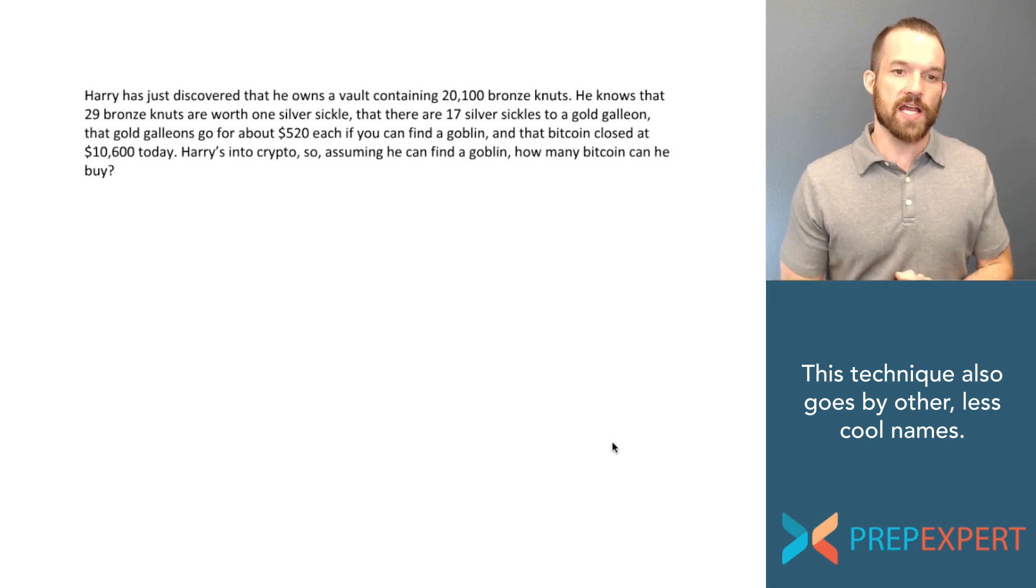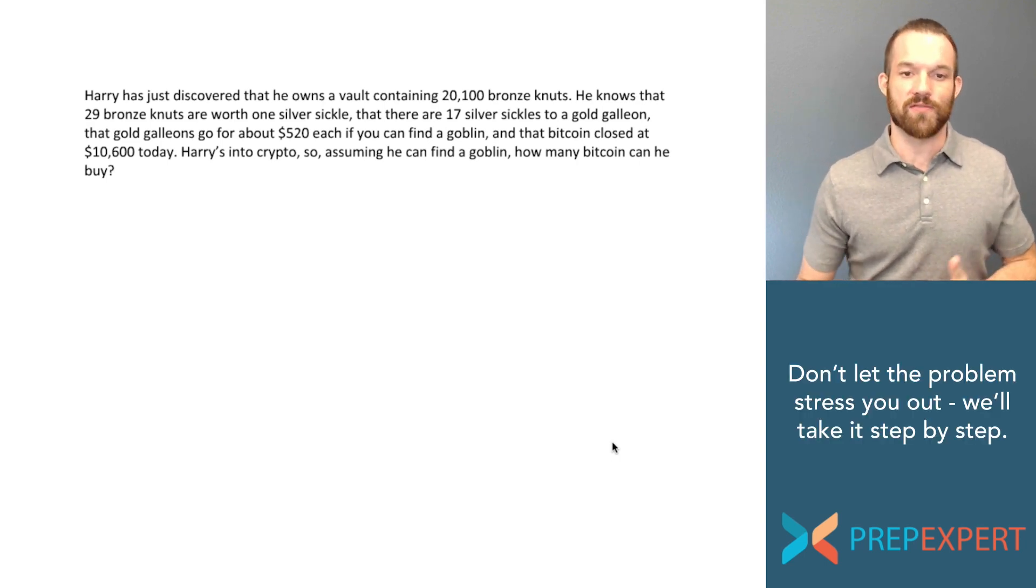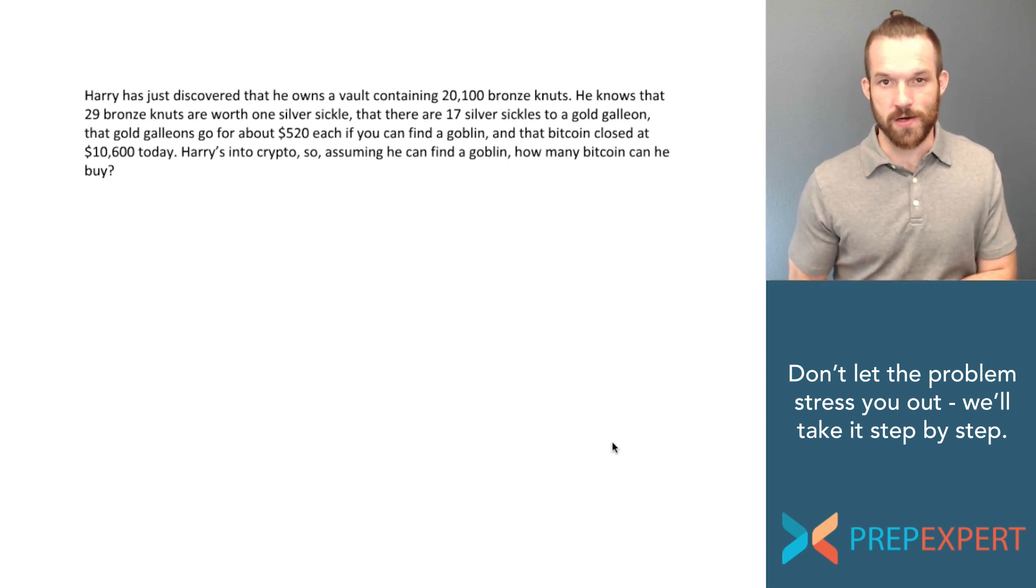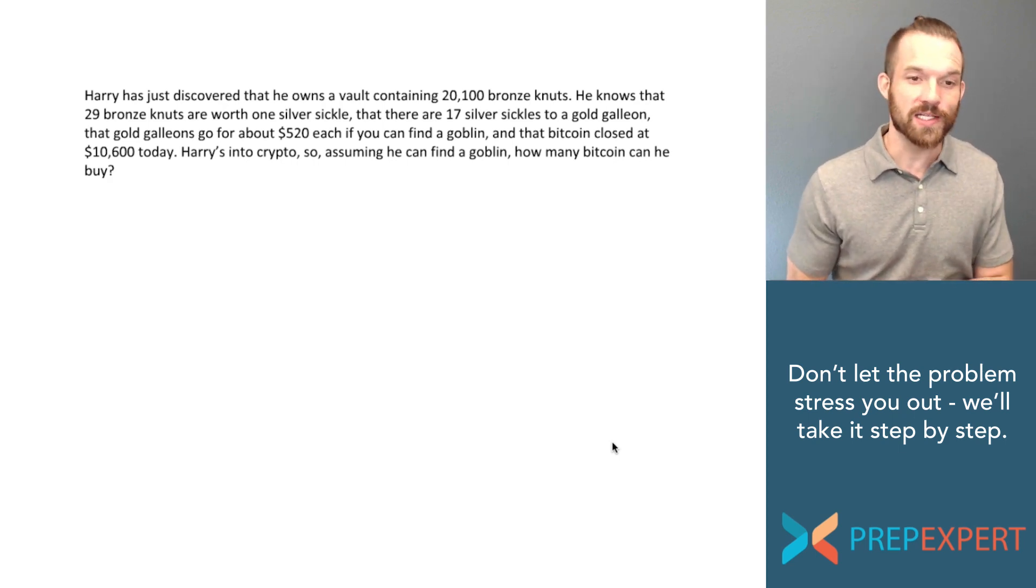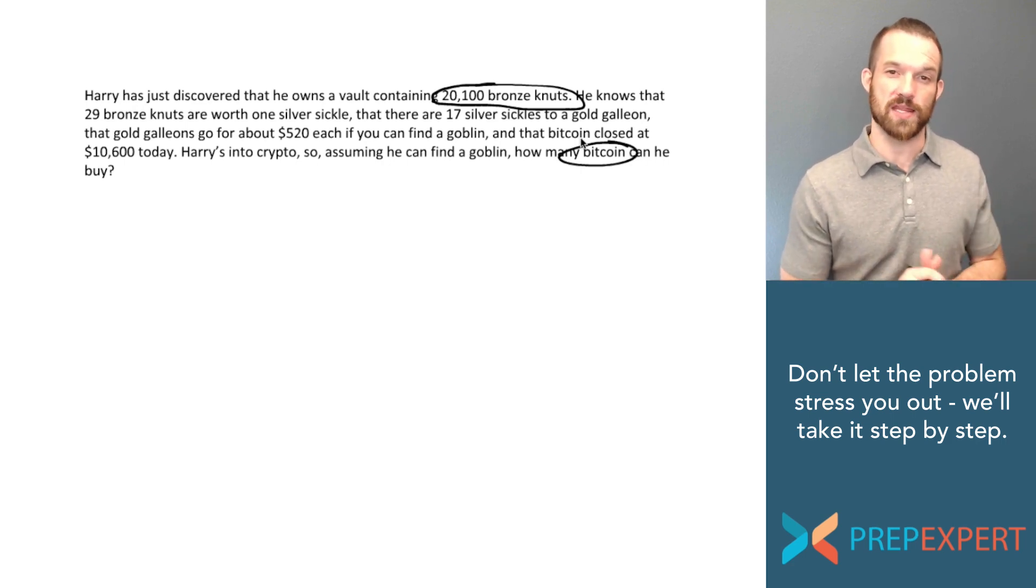Let's take a look at this problem. Harry has just discovered that he owns a vault containing 20,100 bronze nuts. He knows that 29 bronze nuts are worth one silver sickle, that there are 17 silver sickles to a gold galleon and that gold galleons go for about $520 each if you can find a goblin and that Bitcoin closed at $10,600 today. Harry's into crypto so assuming he can find a goblin how many Bitcoin can he buy? We need to find out how many Bitcoin you can buy with 20,100 bronze nuts.